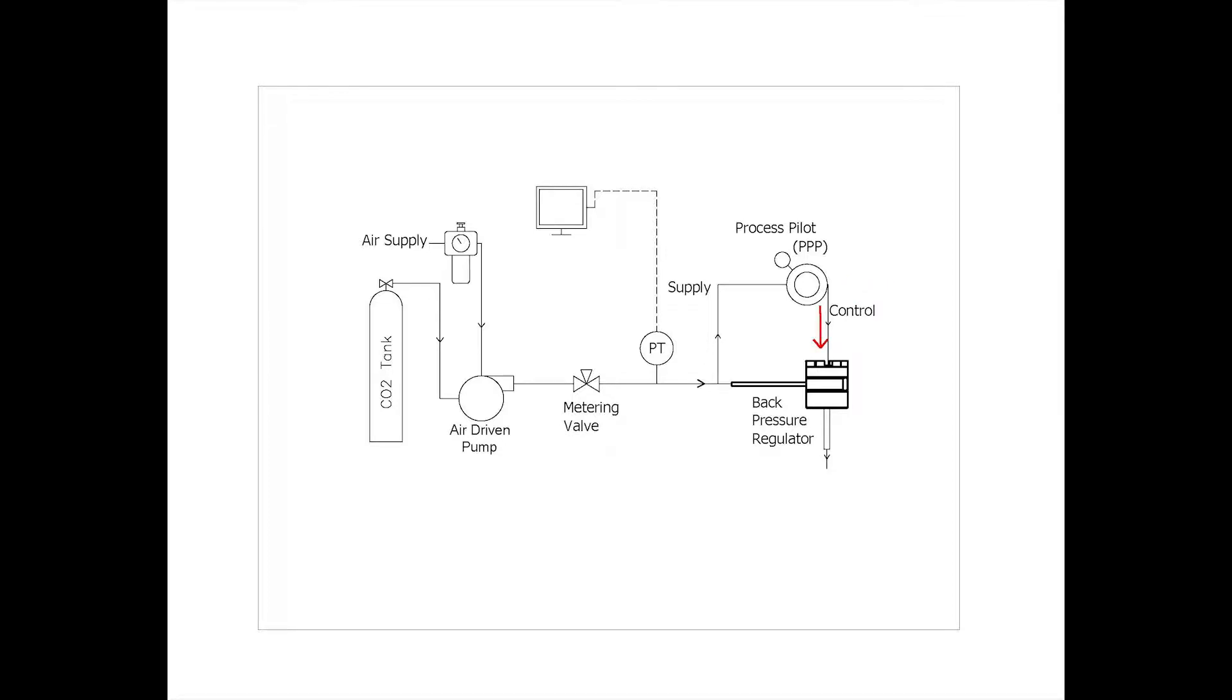As flow begins, both lines are pressurized together up to the setpoint of the pilot regulator. When system pressure slightly exceeds this setpoint on the dome of the Equilibar, flow is finally released through the BPR. We are measuring the BPR's inlet pressure in lab view. Now let's go see the system in action.